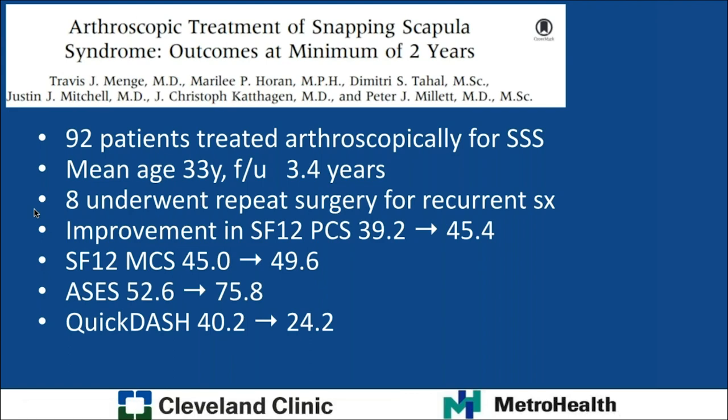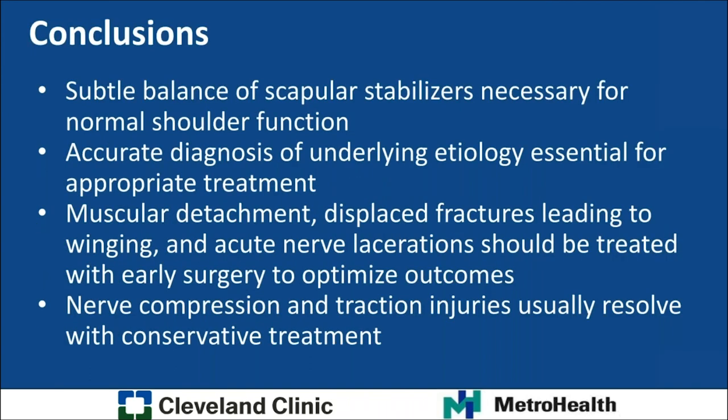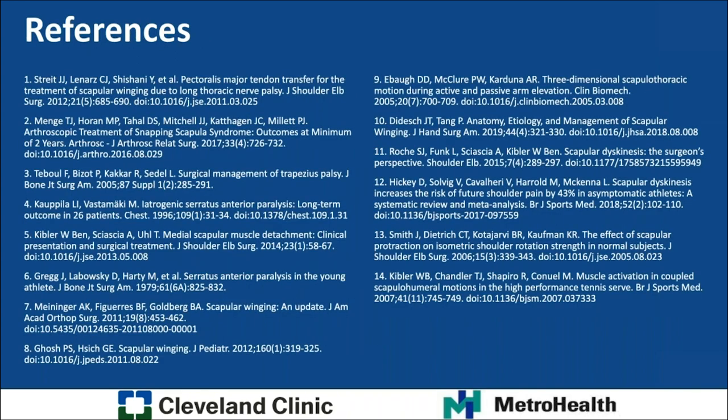To wrap up: the scapulothoracic joint requires a subtle balance of scapula-stabilizing muscles for normal shoulder function. Accurate diagnosis is essential — you don't want to miss acute surgical conditions such as muscular detachment, displaced fractures causing medial winging, or acute lacerations. These have much better results if addressed early. In general, traction and compression injuries typically resolve with conservative treatment.